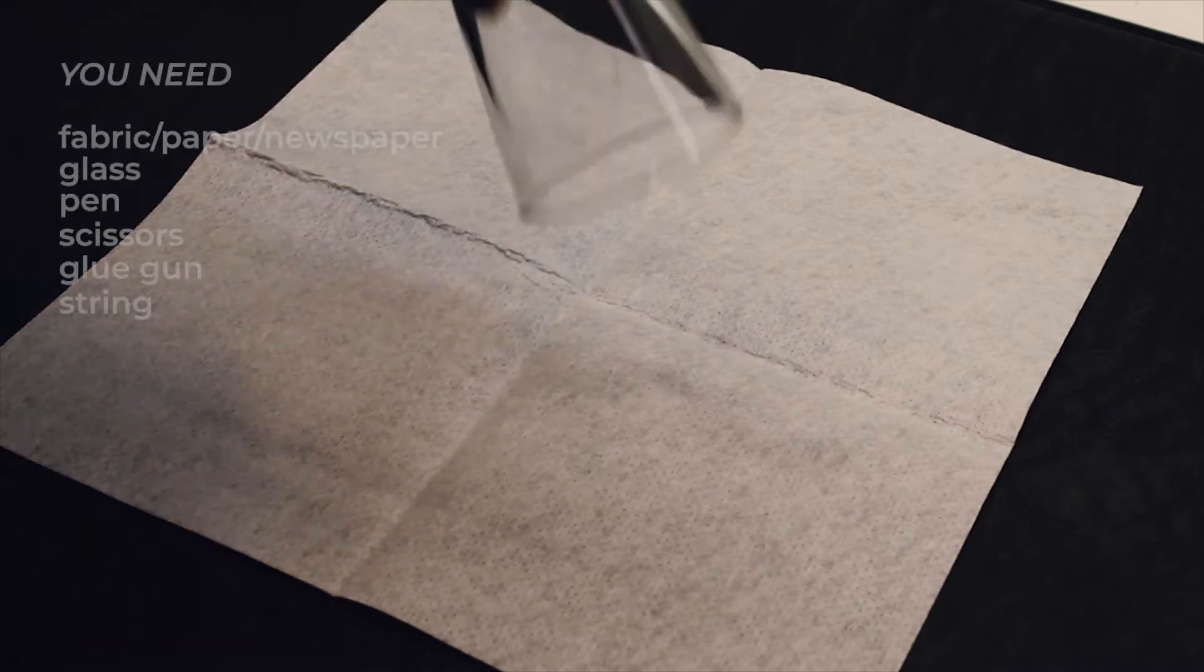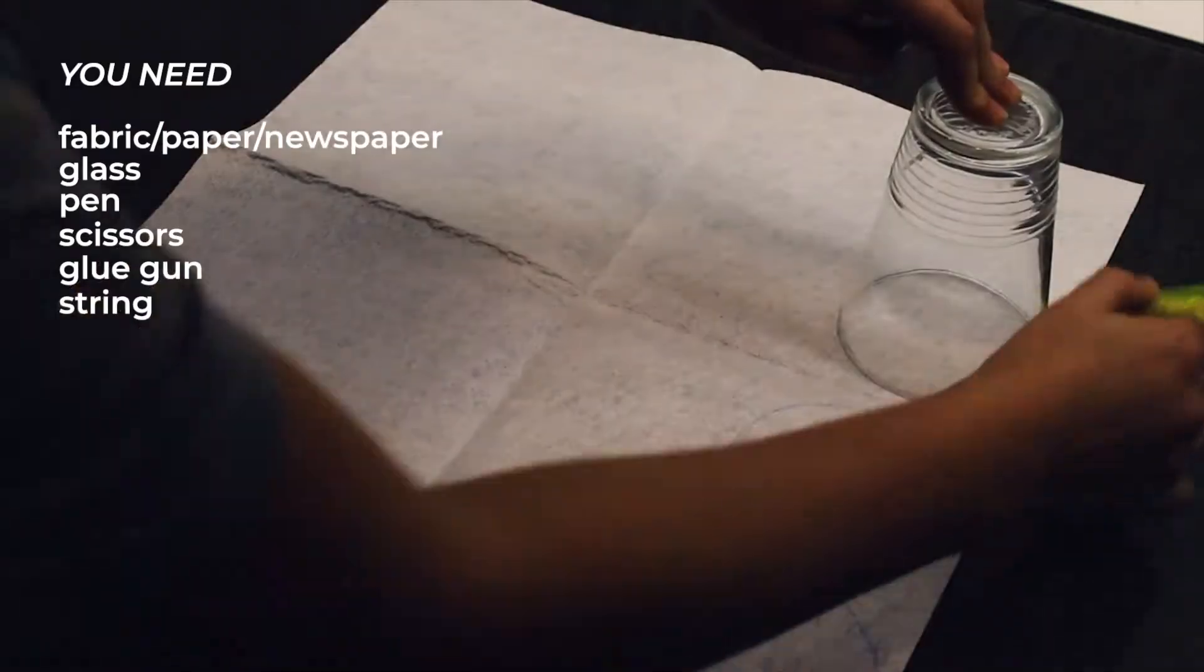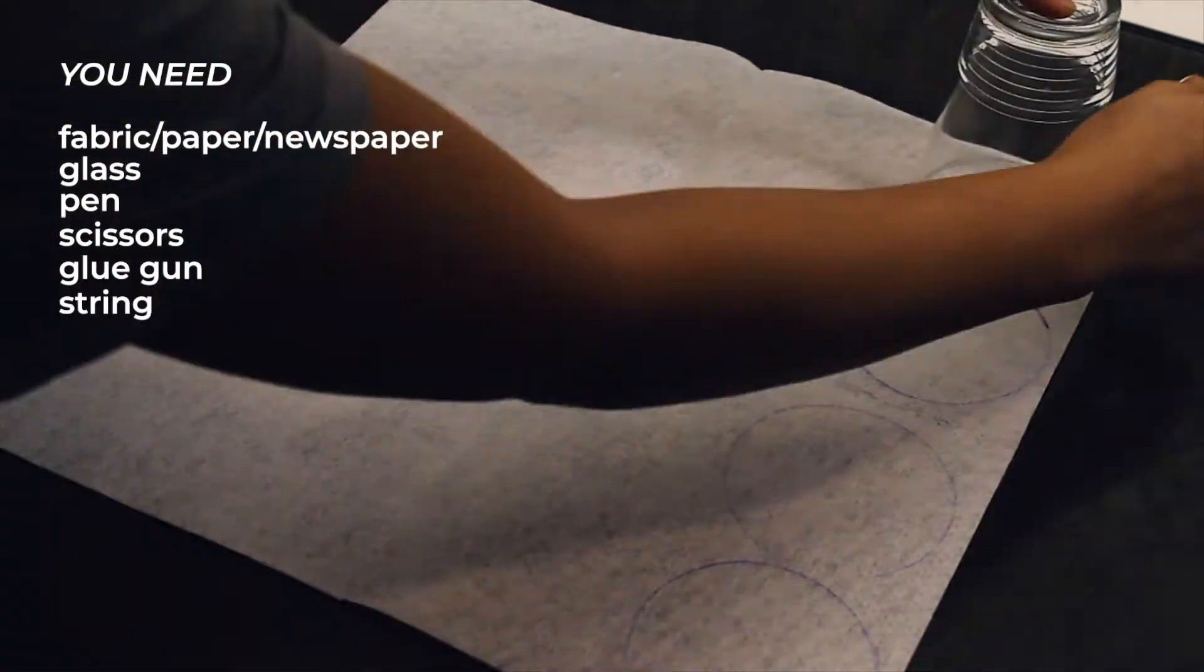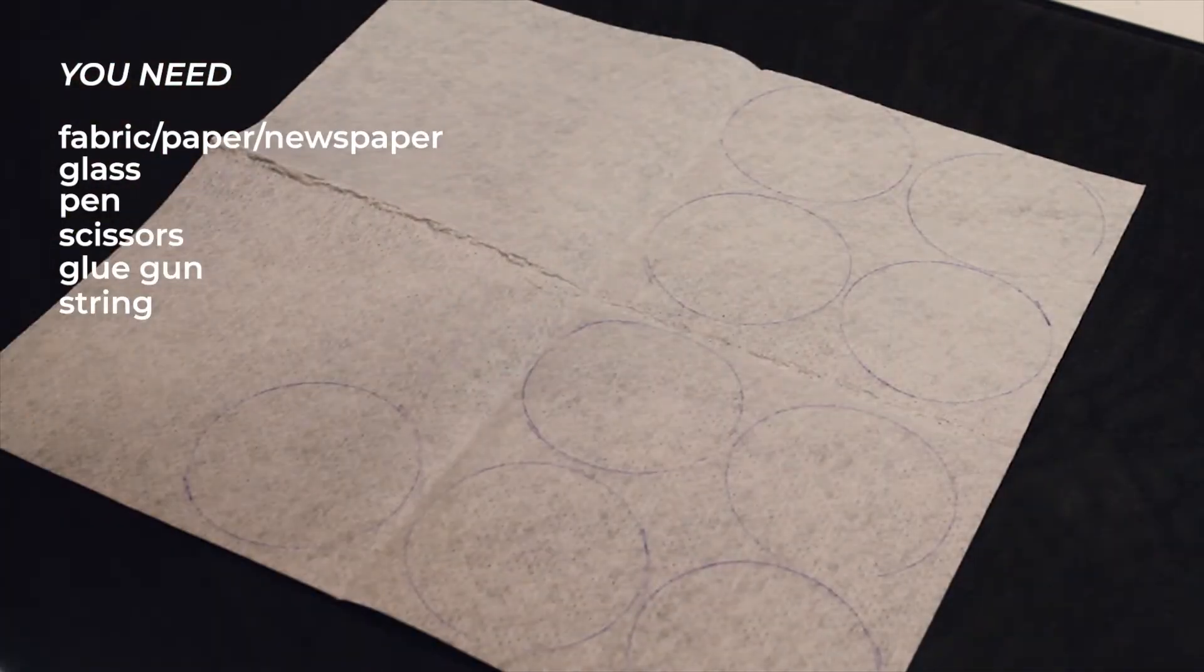Place your fabric or paper on a table. Choose glasses of different sizes and draw the outline with a pen. You need 9 circles of the same size to create one tree globe ornament.